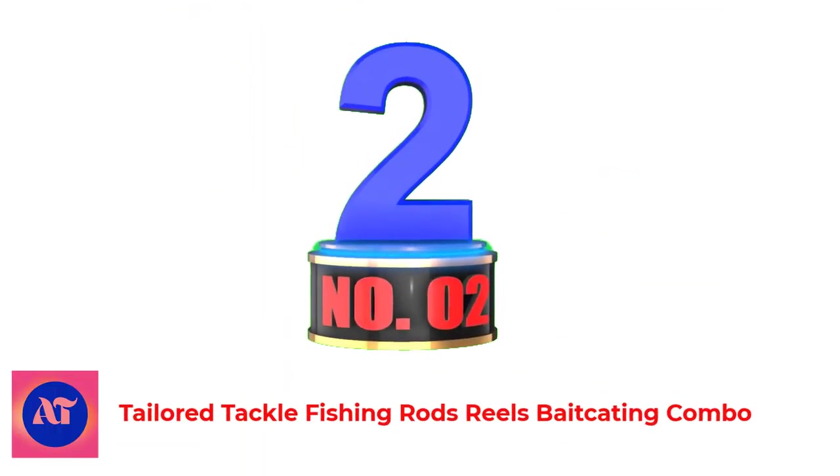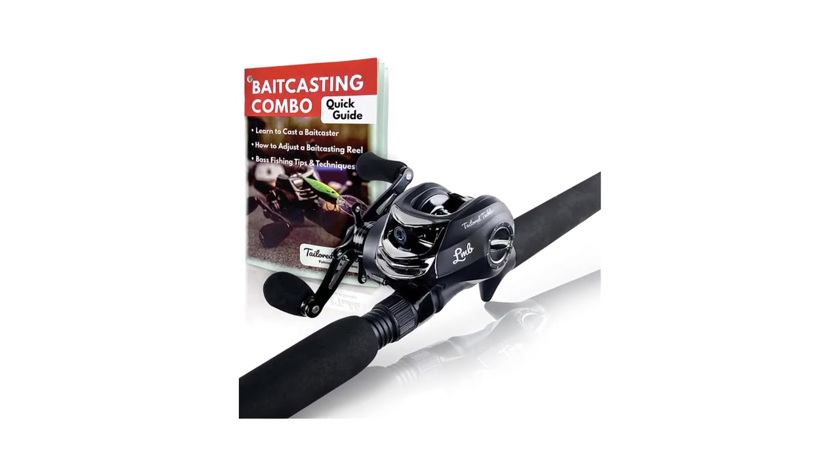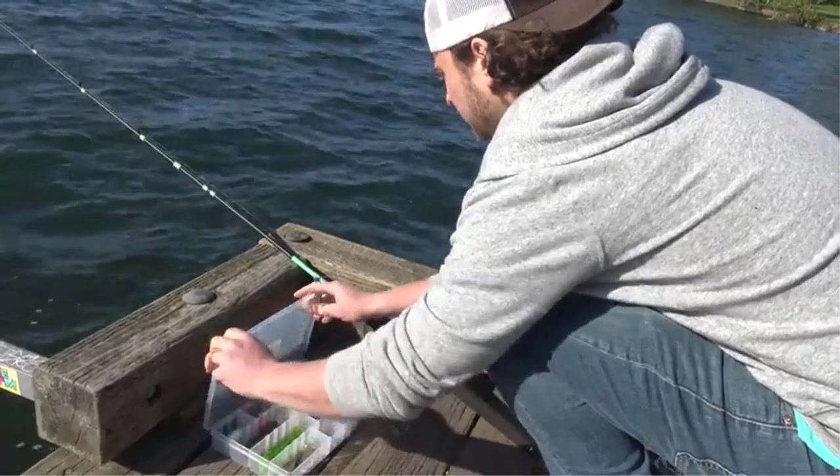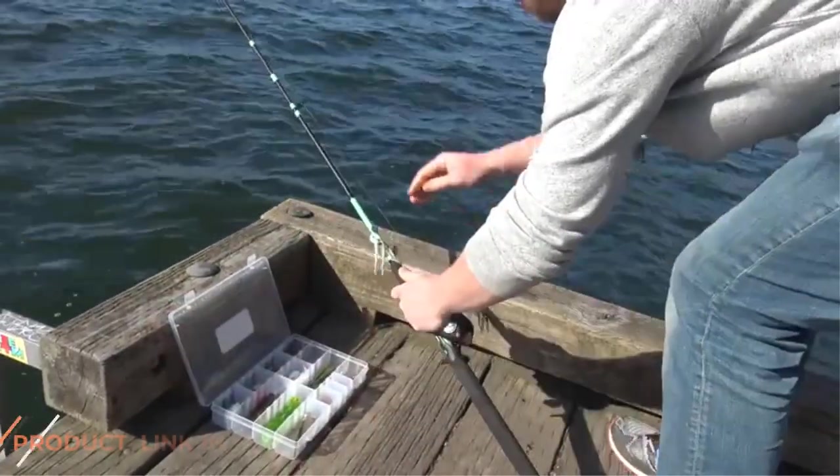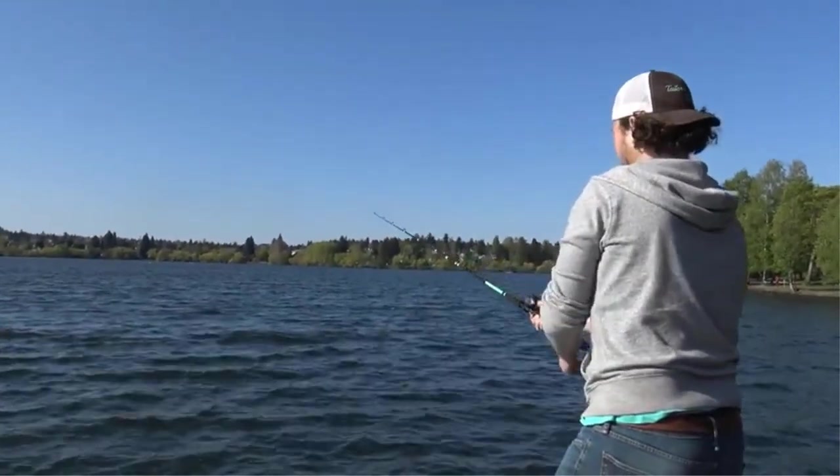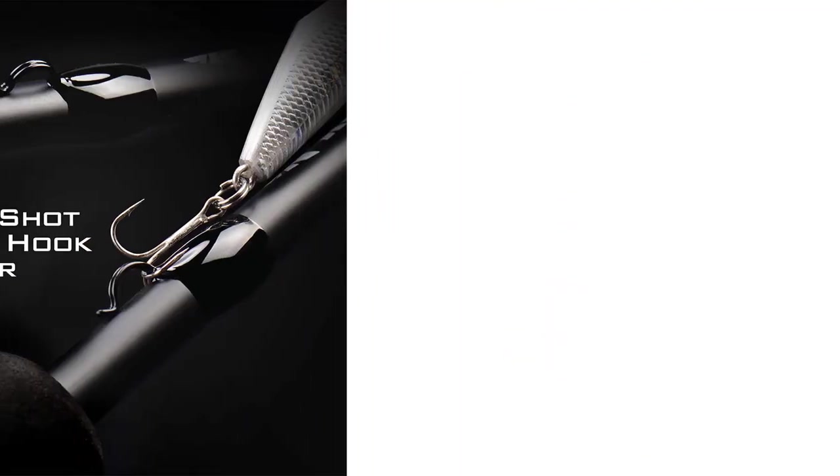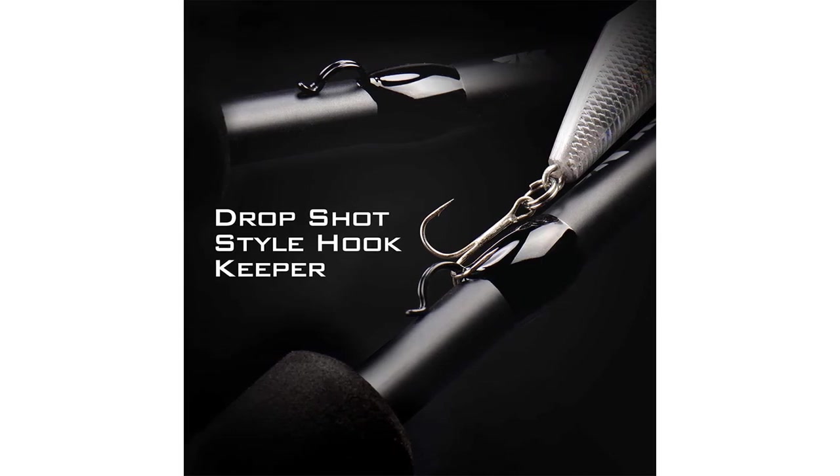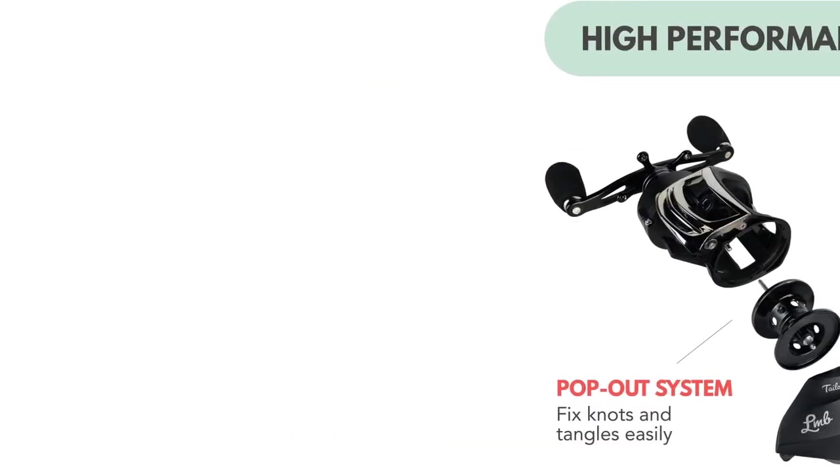Number 2. Tailor Tackle Fishing Rods Reels Baitcasting Combo features a medium-heavy rod power, fast action tip, and an easy-to-cast and untangle pop-off baitcaster reel system. The Tailor Tackle Bass Fishing Baitcasting Combo is available in right-handed and left-handed orientation for every angler's comfort. This bass fishing pole can help you catch and manage catches of all sizes and provide fast action and extra smooth performance.